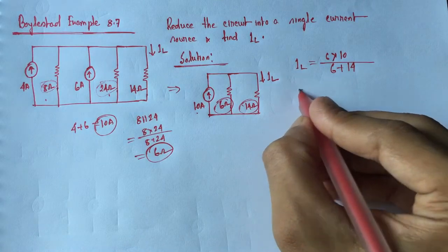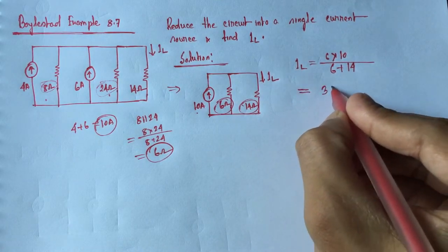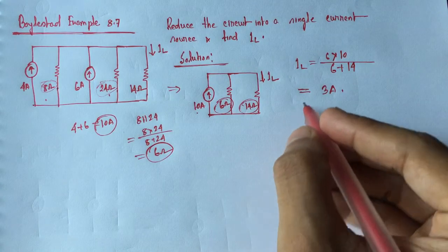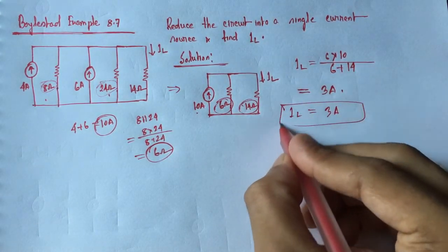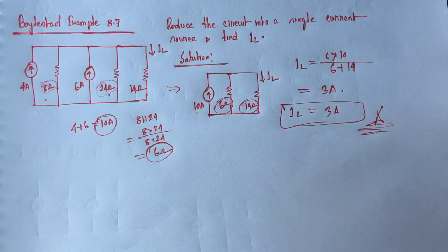So the value is 3 ampere. So we get IL is equal to 3 ampere. This is the answer. Thanks for watching.